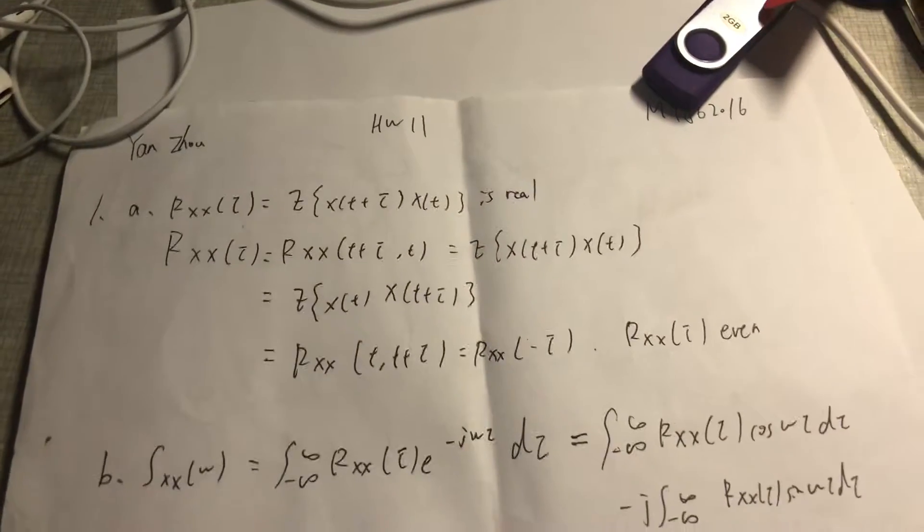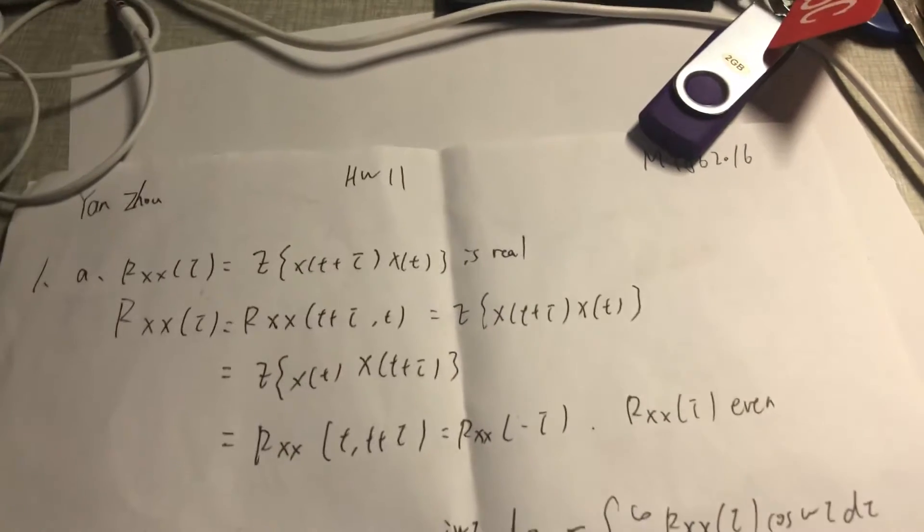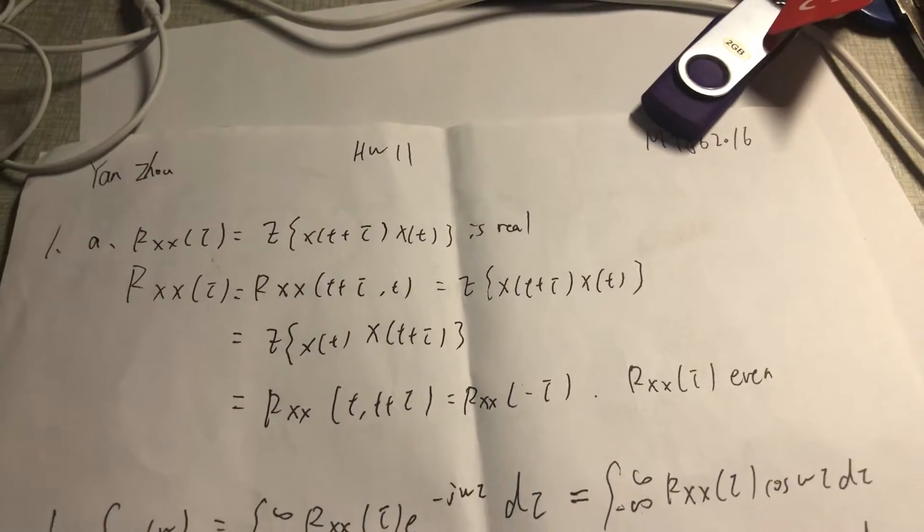Now for the first one, we have R_XX(τ) equals E[X(t+τ)X(t)], which is real.